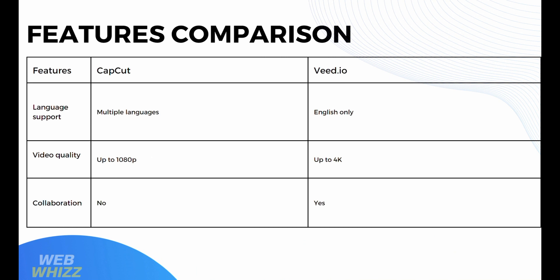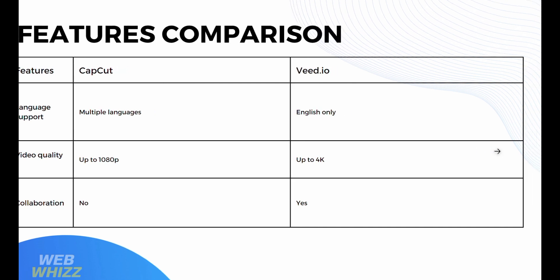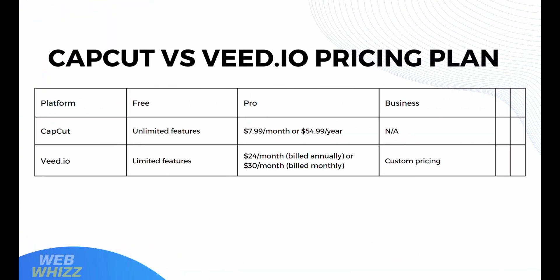In terms of language support, CapCut offers multiple languages while Vid.io only offers English. For video quality, CapCut offers up to 1080p resolution while Vid.io offers up to 4K resolution. Regarding collaboration, CapCut does not offer a collaboration feature, but Vid.io does. On pricing, both platforms offer a free plan, but CapCut offers unlimited features while Vid.io only offers limited features on its free plan. CapCut's pro plan is $7.99 per month or $54.99 per year, while Vid.io's is $24 per month billed annually or $30 per month billed monthly. CapCut has no business plan, but Vid.io offers custom pricing.